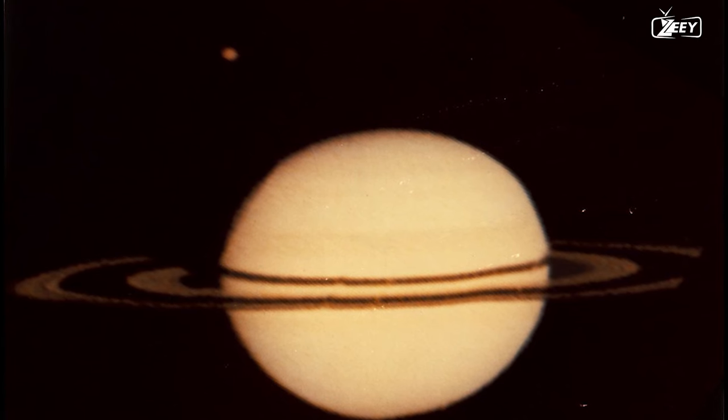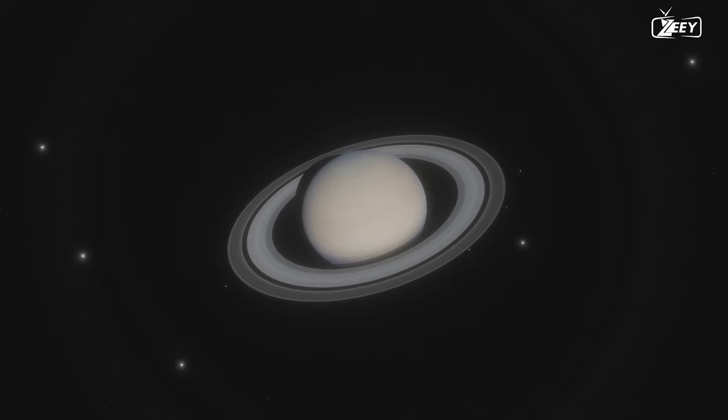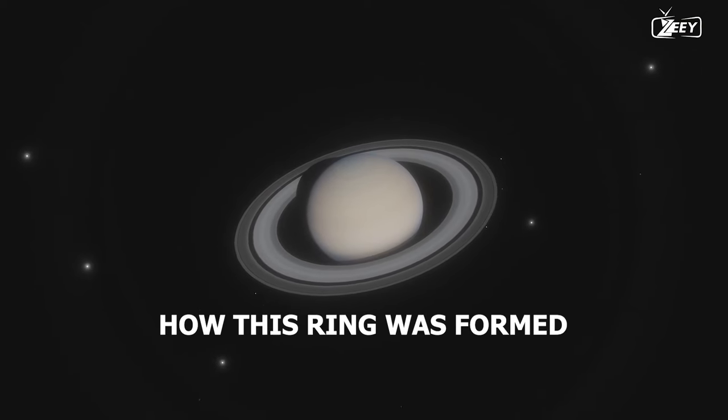These images disclosed that Saturn's asteroid ring is composed of numerous minute particles ranging from dust to boulders the size of houses. However, the query was how this ring was formed.